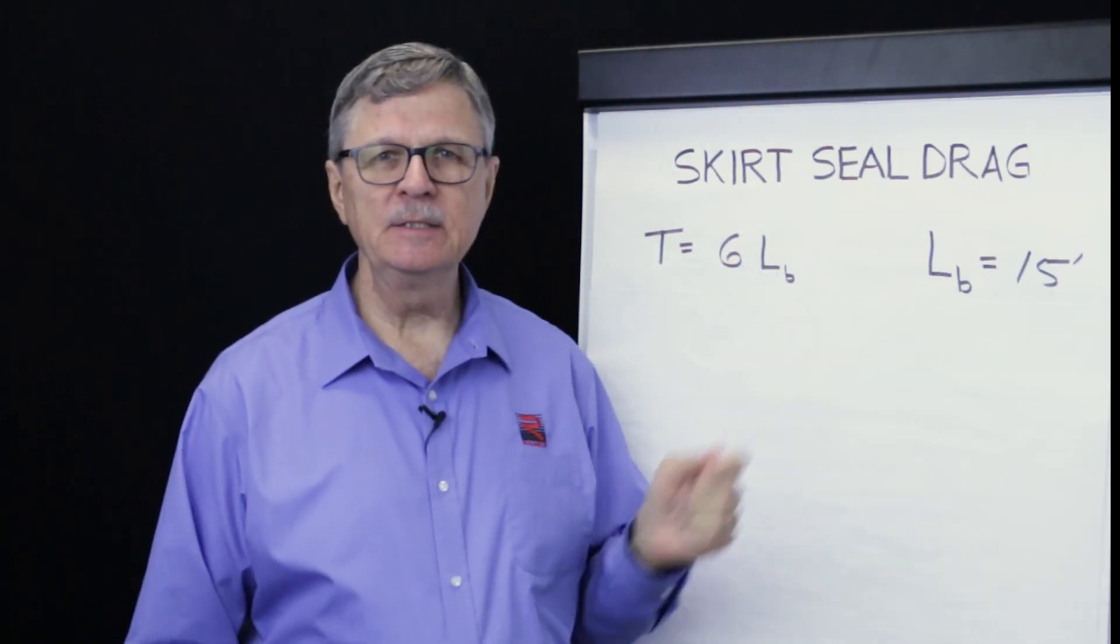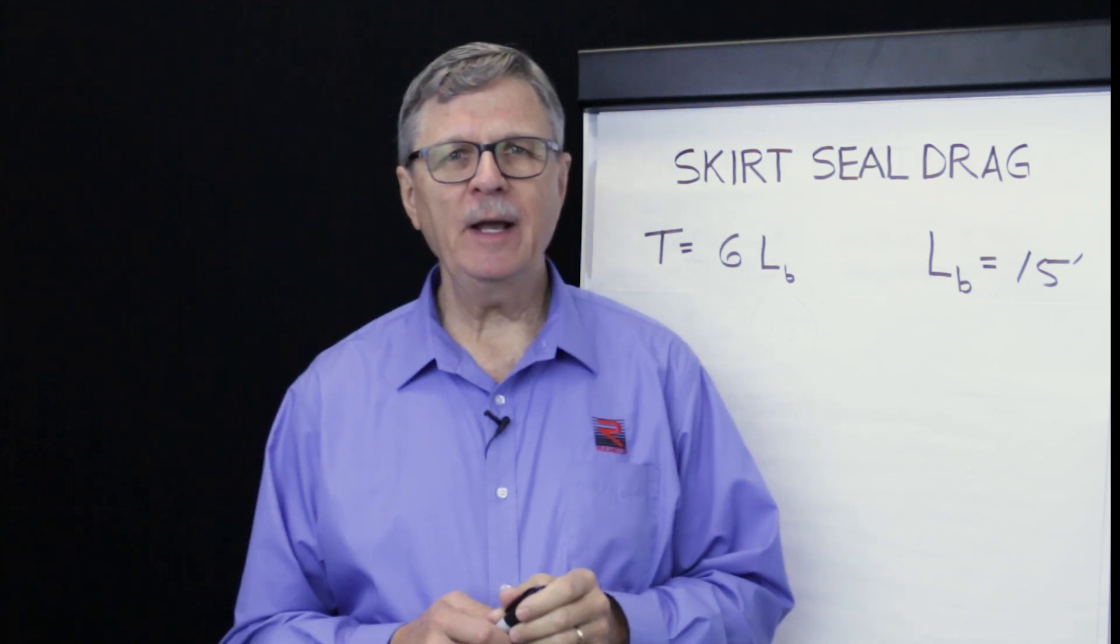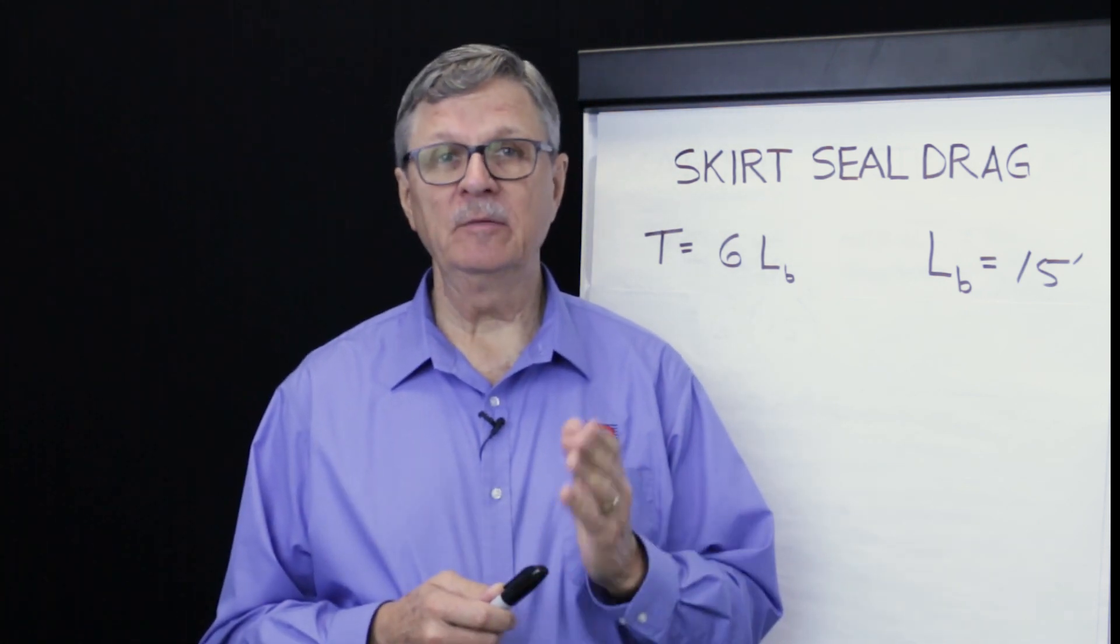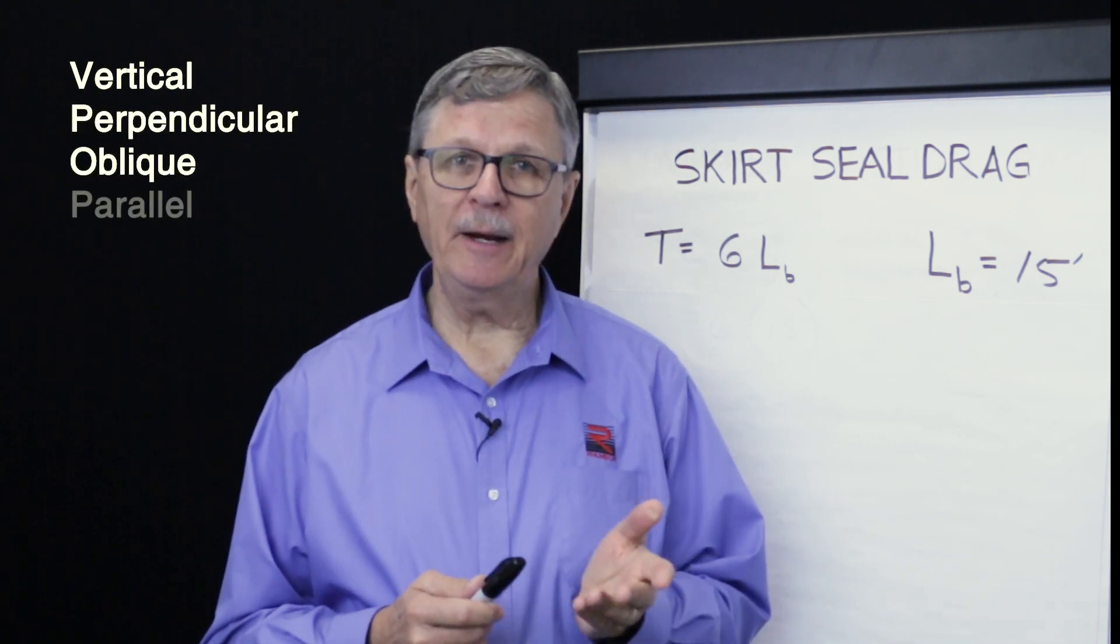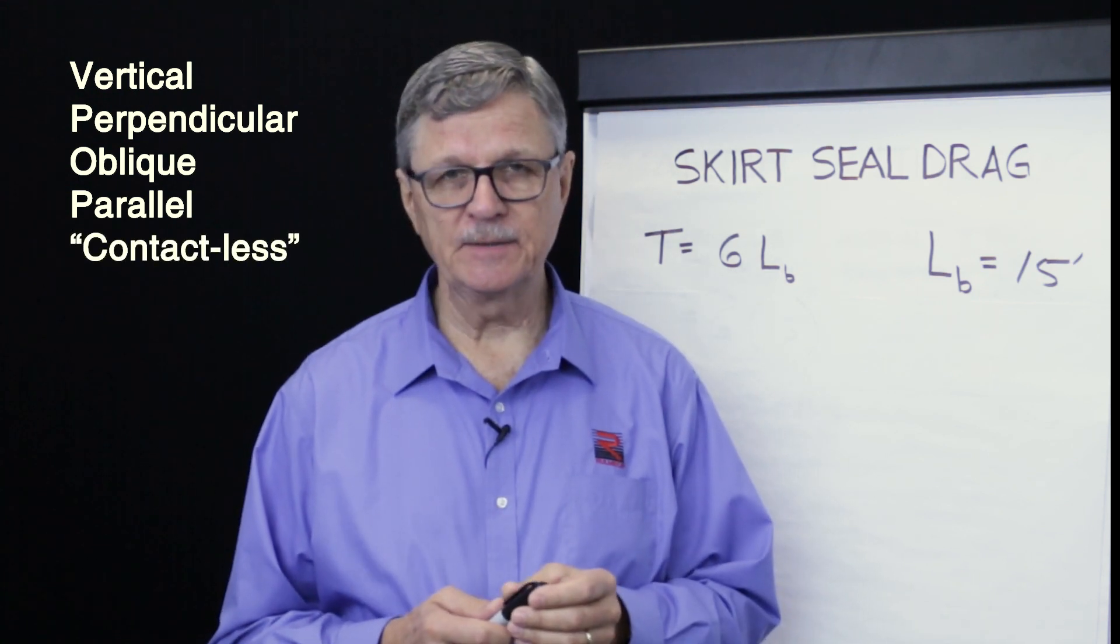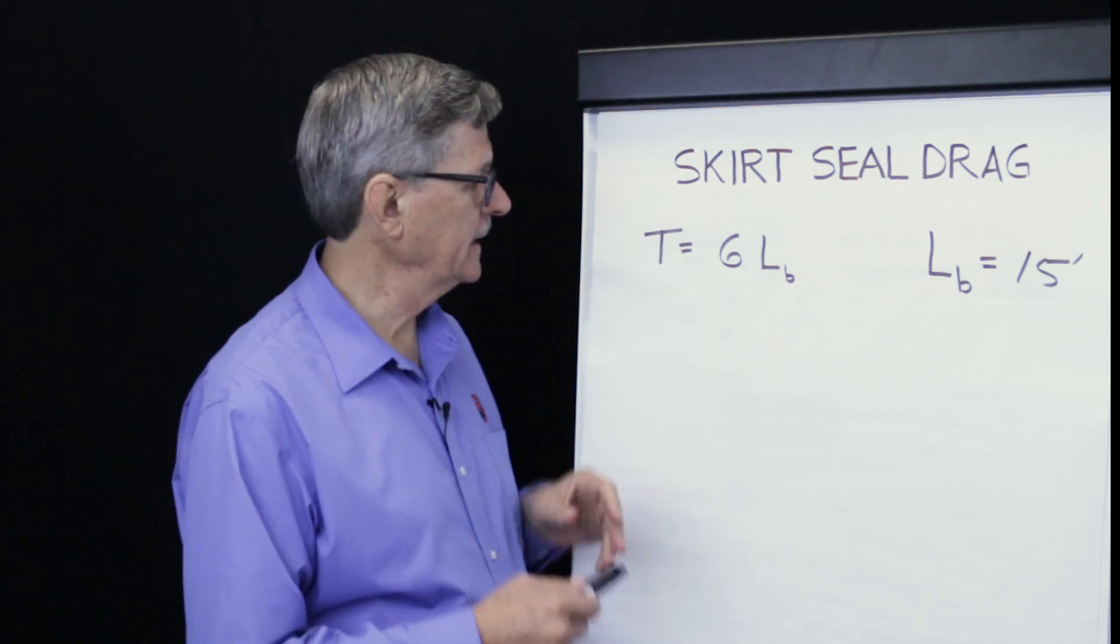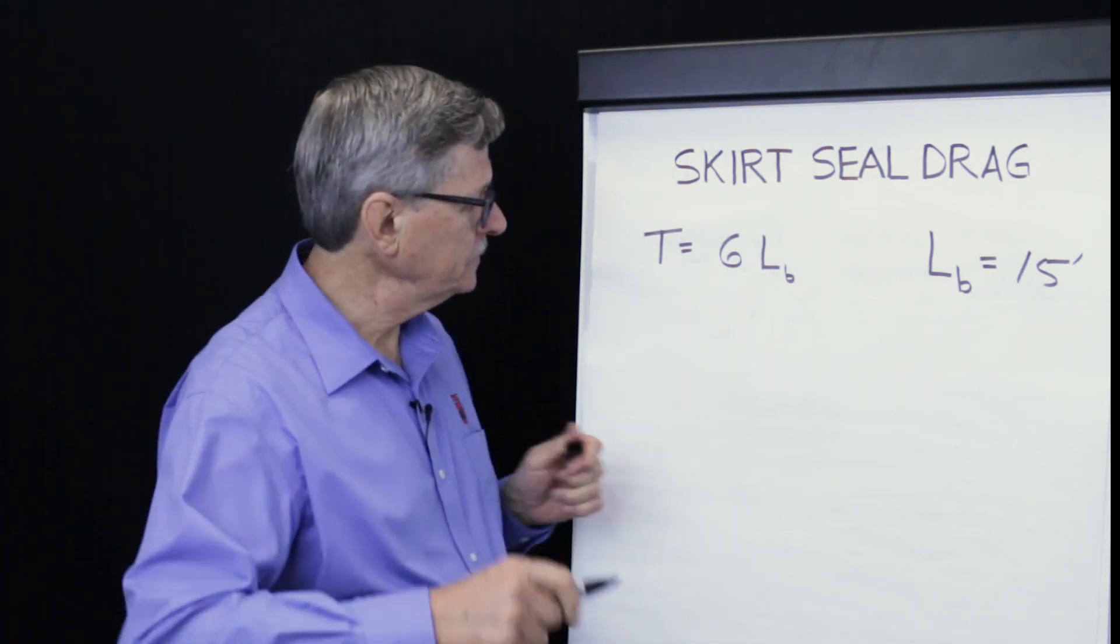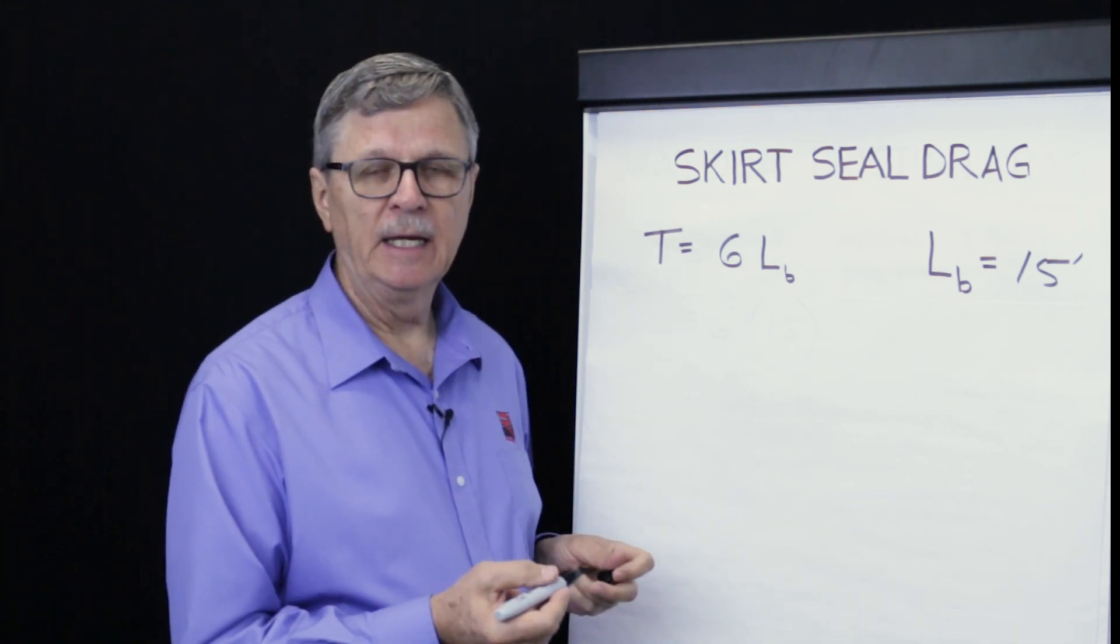Now let's turn our attention to calculating skirt seal drag. A variety of flexible seals are available on the market, and these include vertical, perpendicular, oblique, parallel, and the so-called contactless skirt seal system. CEMA provides this equation to calculate seal drag for conventional seals, and they recommend using a value of 3 pounds per foot of seal.